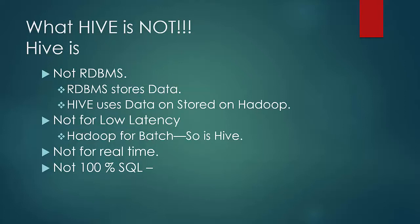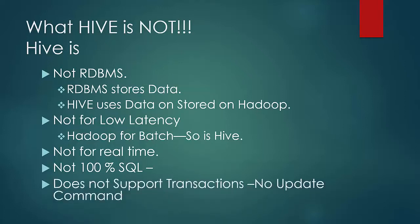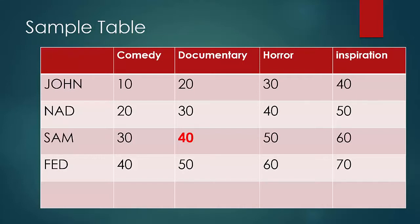Let us understand what this means on a sample table. In this sample table, we have 4 users who have given ratings for 4 different kinds of movies. If we want to delete Sam's rating on documentary, in an RDBMS table we can run an update query to update that value. Whereas in Hive, we cannot update or delete a particular record or perform a row-level transaction. However, Hive supports overwriting the entire table or appending a 5th user to the table.